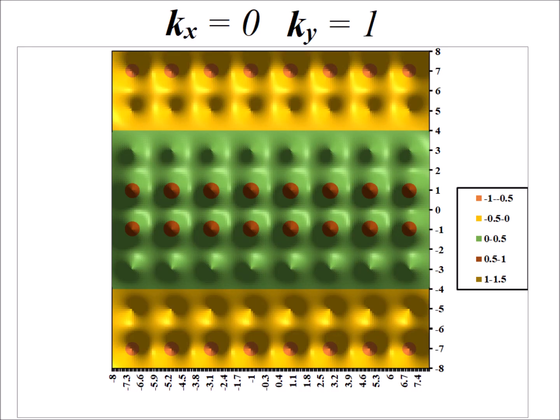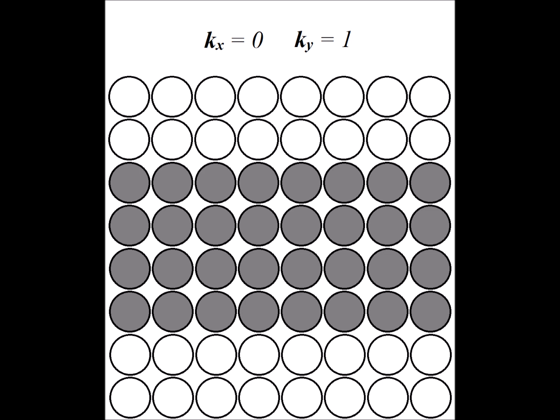Here we have a top-down view for the eigenfunction when kx is equal to 0 and ky is equal to 1. Everything that is white is of one phase and everything that is dark gray is the opposite phase. Notice how it looks like we have just taken the (1,0) case and rotated by 90 degrees. That will always be true when we have a square because it has so-called d4h symmetry, and we end up with degeneracy of both the (1,0) and (0,1) states.